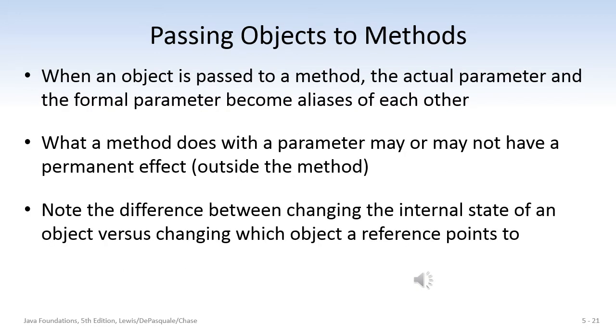So here we're going to pull together several concepts that we've been discussing. When an object is passed to a method, the parameter and the formal parameter become aliases of each other, meaning the formal parameter will become an alias of the object that was passed as a parameter. And what the method does with a parameter may or may not have a permanent effect. So we need to note the difference between changing the internal state of an object versus changing which object a reference points to. Very significant difference. And we're going to look at a coded example next.